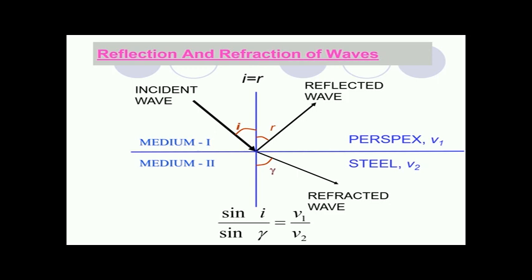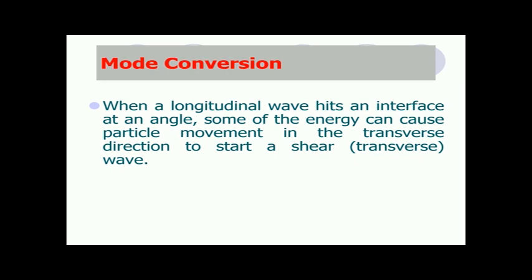The angle of the refracted wave is given as gamma. Snell's law can be written as sin I divided by sin gamma equals V1 divided by V2. In case of refracted waves, angle gamma will be different from angle I because the velocities in the two mediums are different. Mode conversion is a phenomenon where a longitudinal wave hitting an interface at an angle causes some energy to make particles move in the transverse direction as well, generating a shear wave.